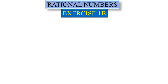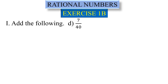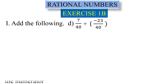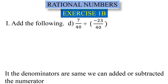Next, Exercise 1b, subdivision d: add 7 divided by 40 plus minus 23 divided by 40. We need to add these two numbers — one positive and one negative rational number. First, check the denominators: both are 40, so the denominators are the same.